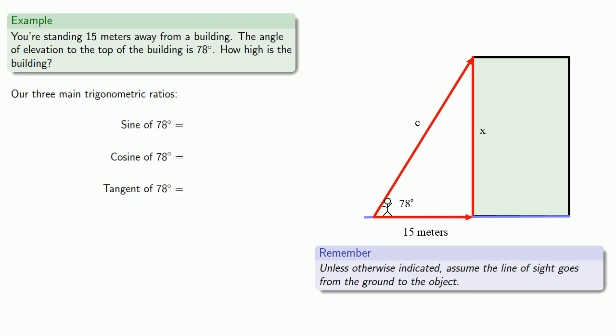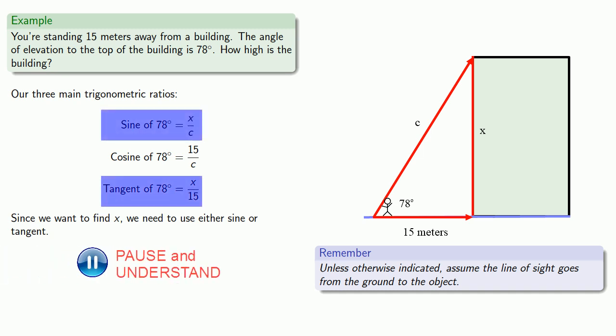So the sine of 78 is opposite over hypotenuse, cosine is adjacent over hypotenuse, tangent is opposite over adjacent. Since we want to find x, the height of the building, we need to use either sine or tangent. But we don't know c, so we can't use sine, so we'll use tangent.